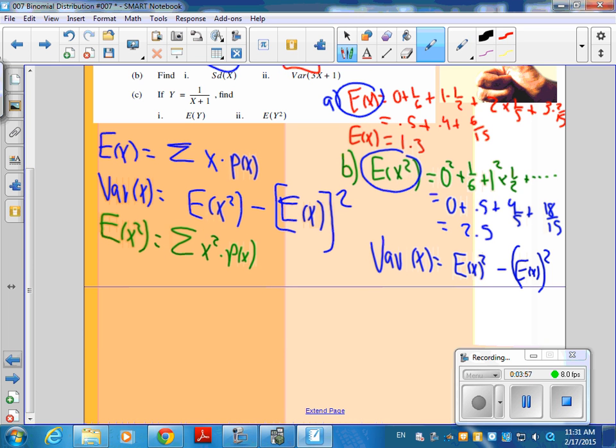So, let's do it. This is going to be 2.5 minus 1.3 squared. And what is 2.5 minus 1.3 squared? 0.81.